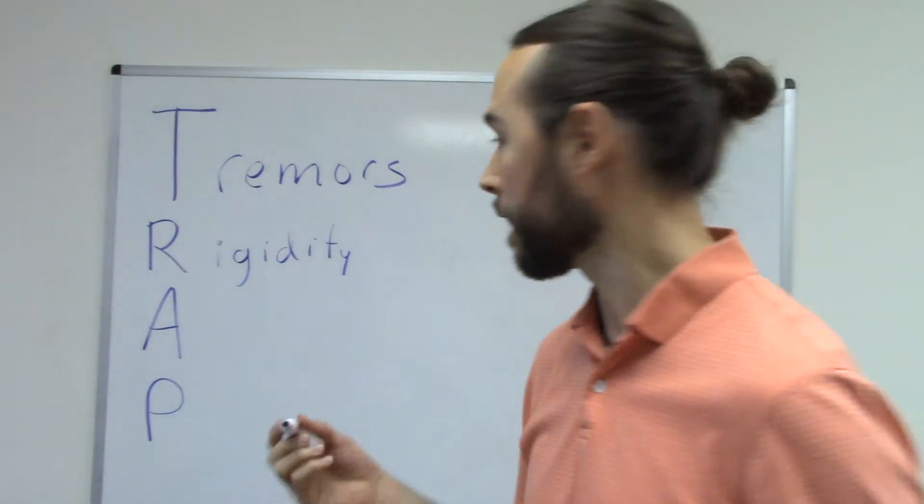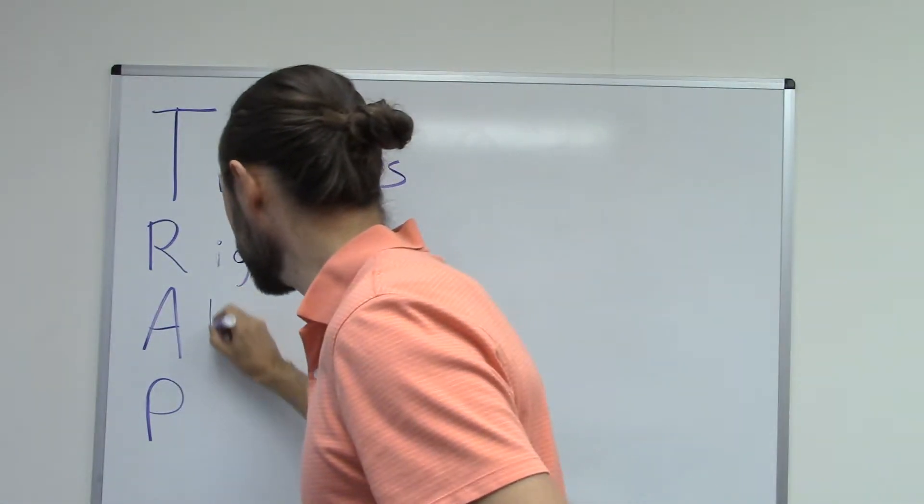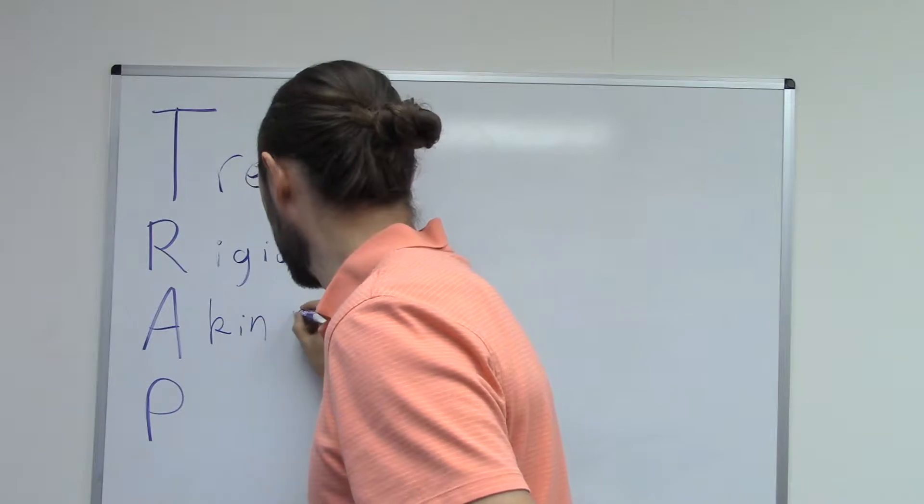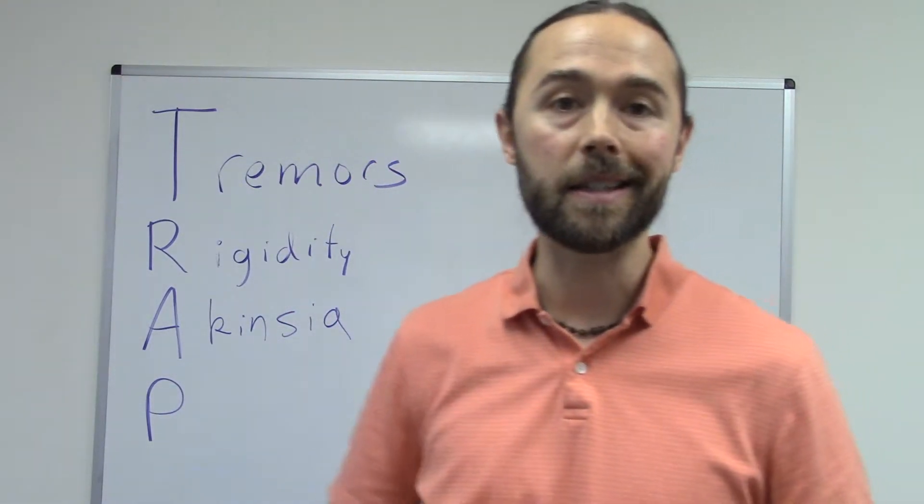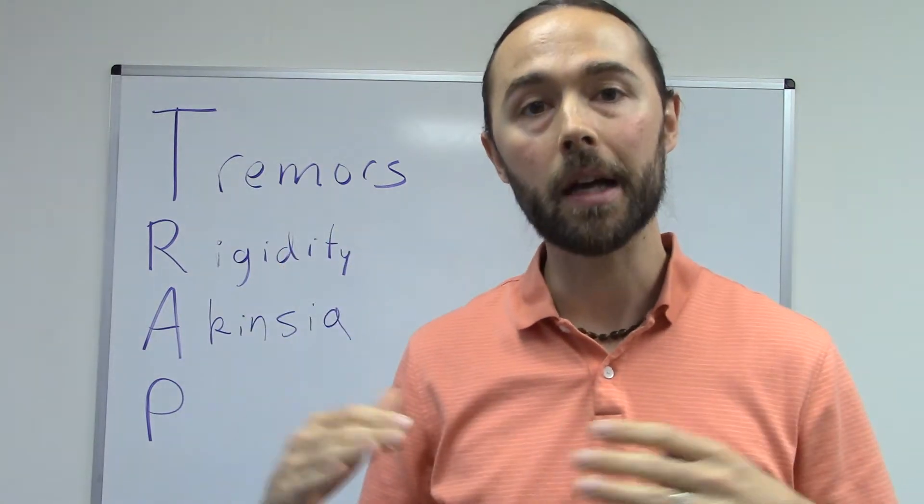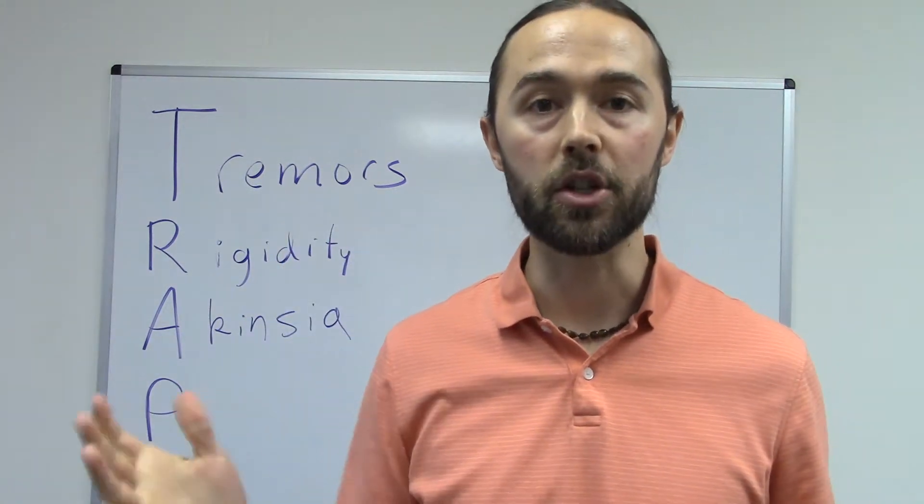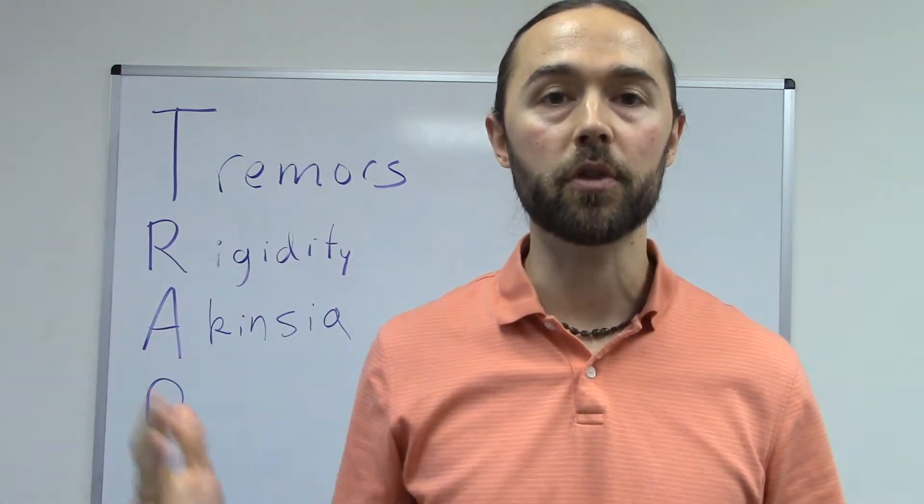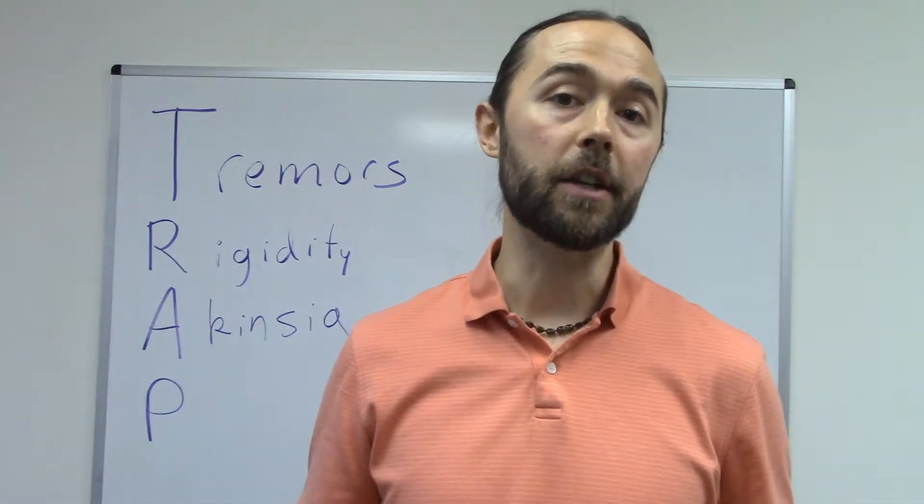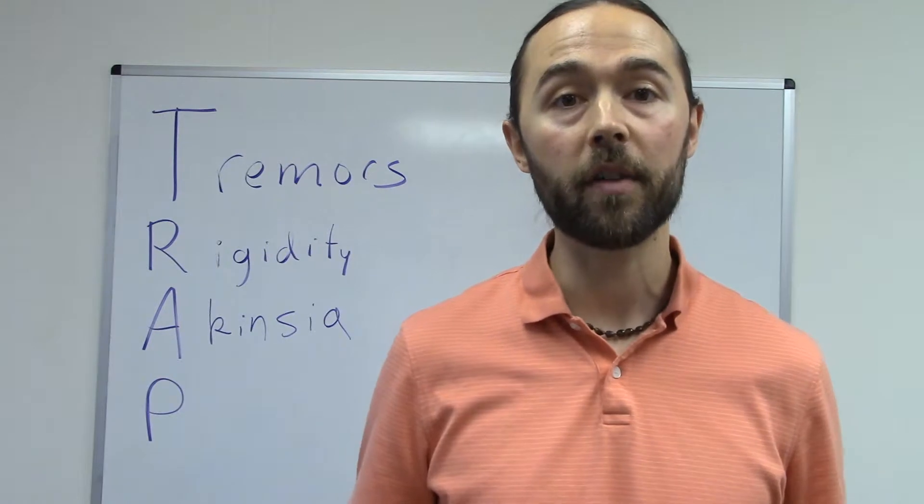So that's the R. The A then, we call it akinesia, which is a very general term for a movement pattern that isn't normal. So A as in not normal kinesia movement pattern. So again, a more broad descriptive term.